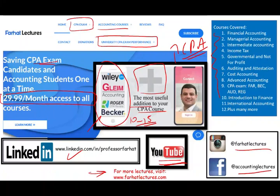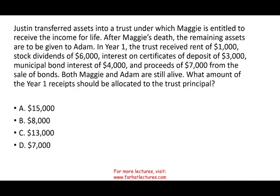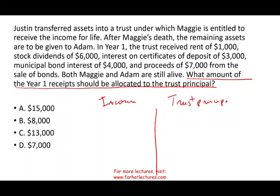Always read the question first. The question reads: what amount of year one receipts should be allocated to the trust principal? What does that mean? I see some numbers — what amount is allocated to the trust and what amount is allocated to income? Immediately in your mind, you should think: certain things go under income, certain things go under the trust principal — sometimes called on the exam the corpus, what stays with the trust. So here they're asking you what amount goes to principal.